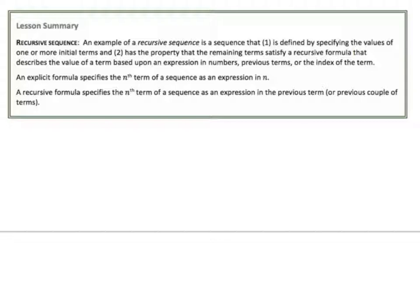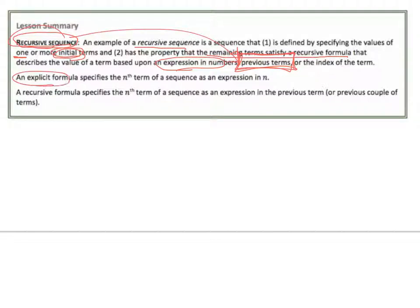Alright, that's it. Let's remember what a recursive sequence is. A recursive sequence is defined by specifying the values of one or more initial terms, and it has the property that the remaining terms satisfy a recursive formula — which describes the value of a term based on the previous term. The key: with a recursive sequence, I have to know the previous term. An explicit formula is easier because I can figure out the nth term no matter where I want to start. The recursive formula specifies the nth term as an expression in the previous term; the explicit formula lets you jump in wherever you want.